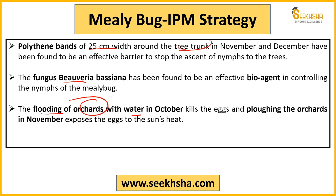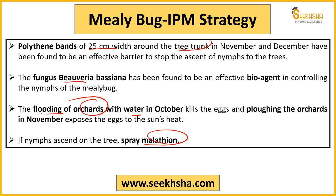Aur plowing karo orchards ki November ke maheene ke andar — usse kya hoga jo eggs hain woh heat se expose ho jaayenge, sun ki heat ko expose ho jaayenge, and ultimately they will be removed. Also aap malathion ka spray kar sakte ho — malathion ka spray bhi aapke paas ek option isme rehta hai. Polythene band, Beauveria bassiana fungus — yeh direct question aata hai paper ke andar ki which among the following fungus can be used as a bio agent to protect the mango orchards from mealy bug. Toh fungus Beauveria bassiana ho jaayega.